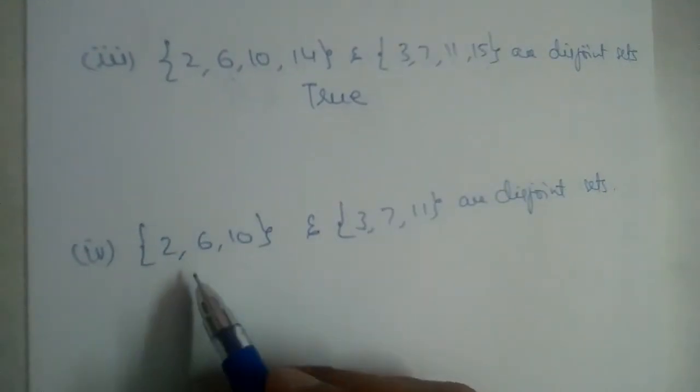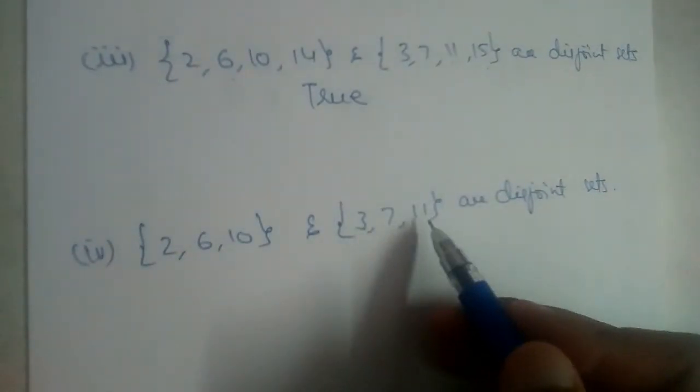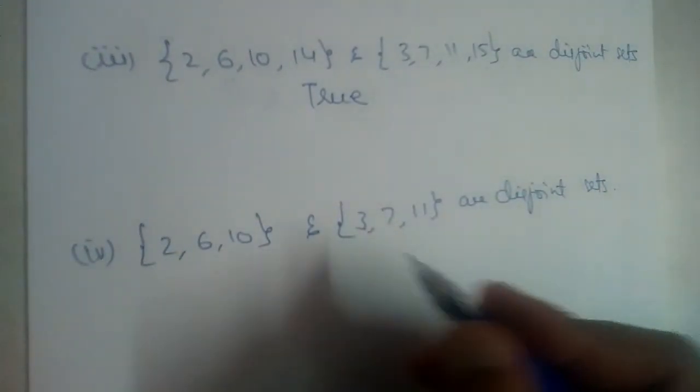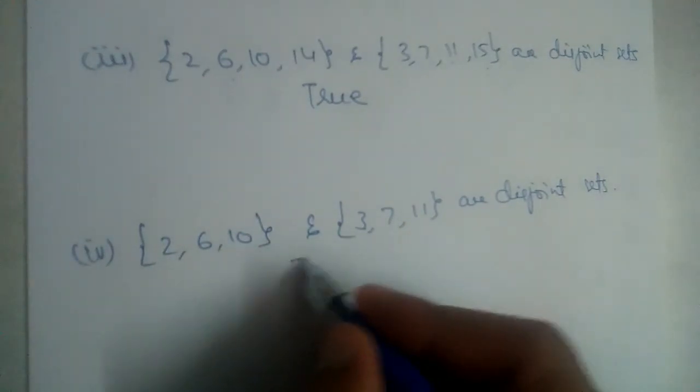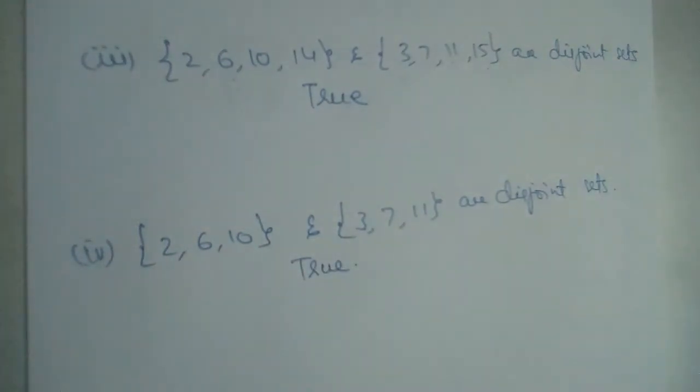Last one: {2, 6, 10} and {3, 7, 11} are disjoint sets. Yes, because no element is common. This is true.